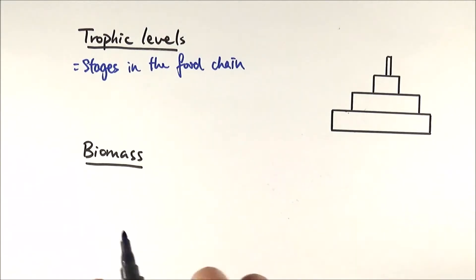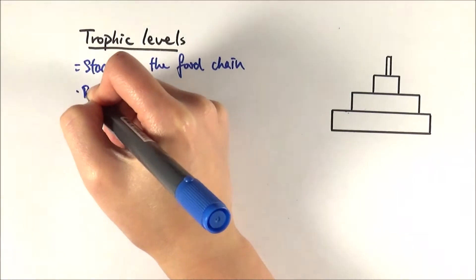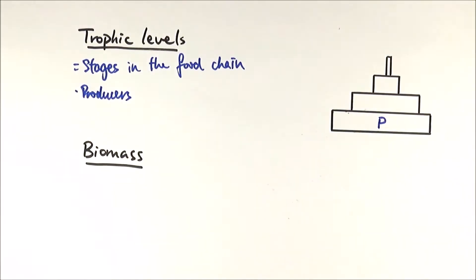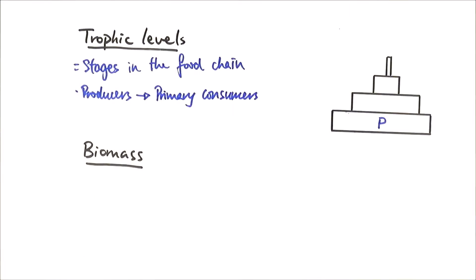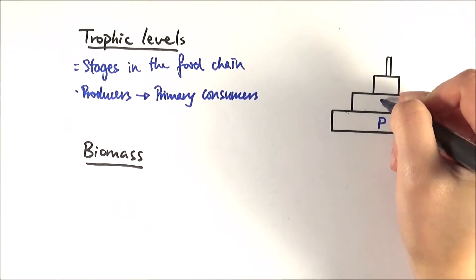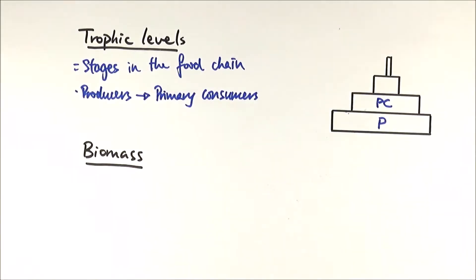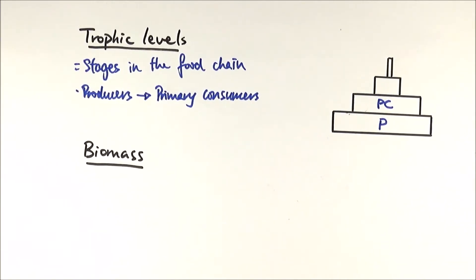At the basic level we have producers, which are usually plants that produce food in the first place. They absorb light energy from the sun to carry out photosynthesis, making glucose as their energy source. The producers then get eaten by primary consumers, which occupy the second level of the food chain — usually herbivores that eat the plants.